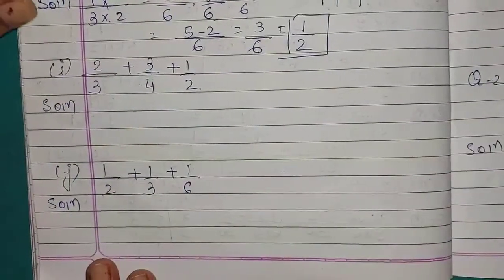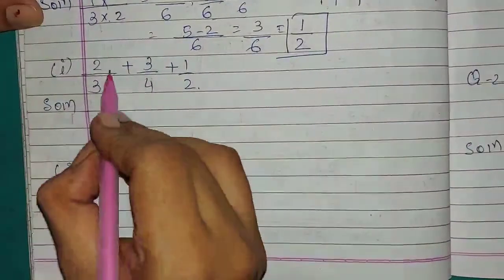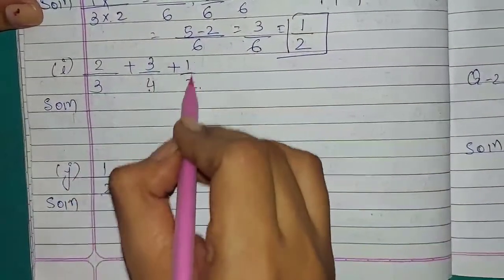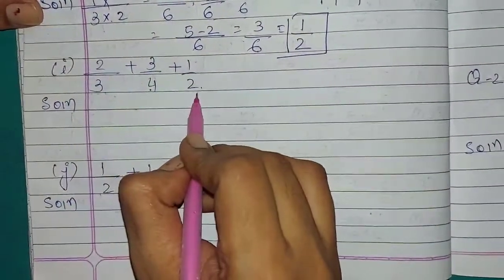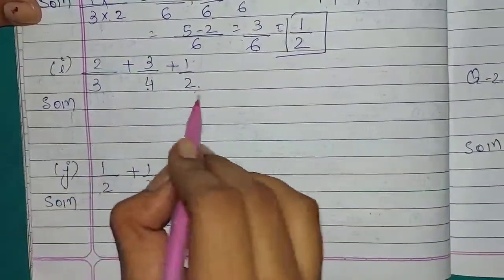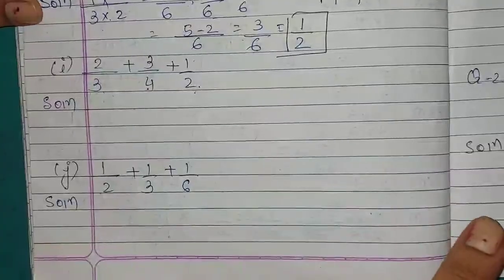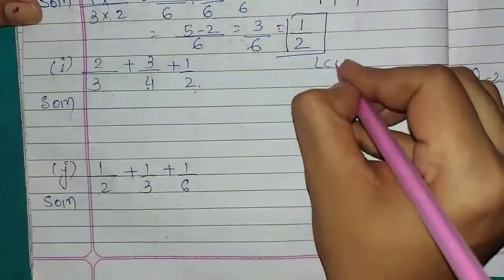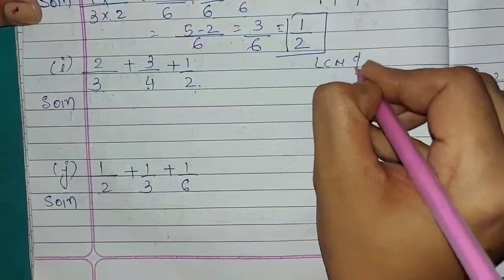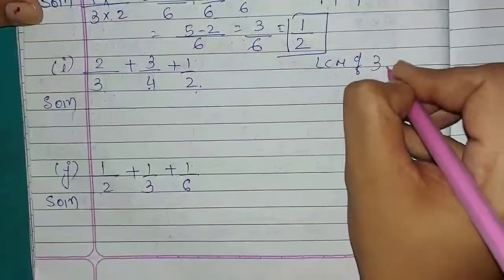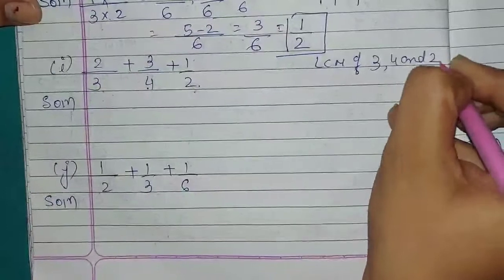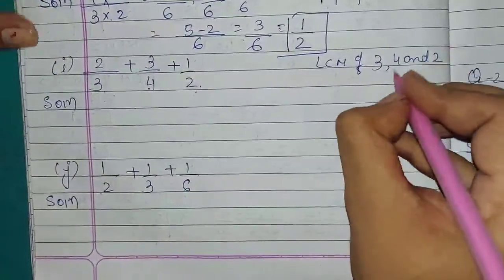Question number I: 2 upon 3 plus 3 upon 4 plus 1 upon 2. Here 3 unlike fractions are there. So we will take LCM of all 3 denominators: 3, 4, and 2.